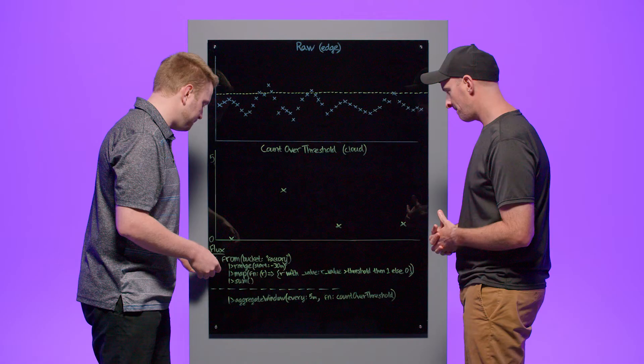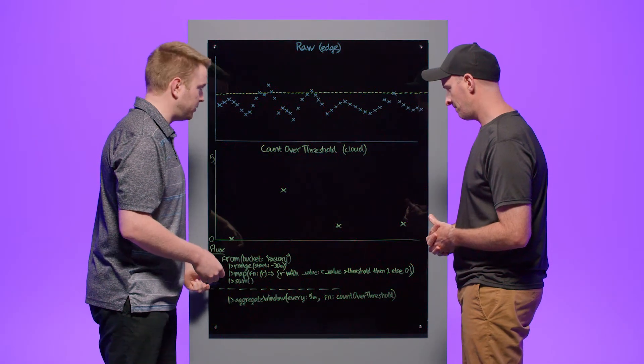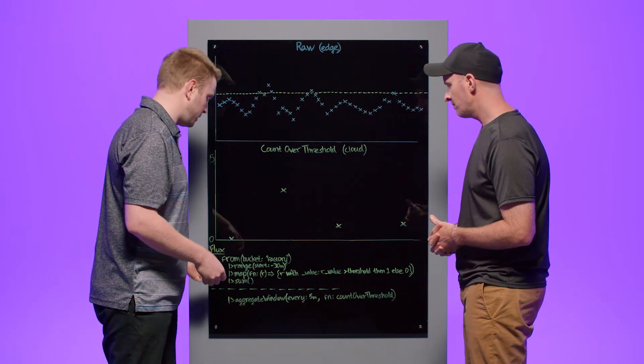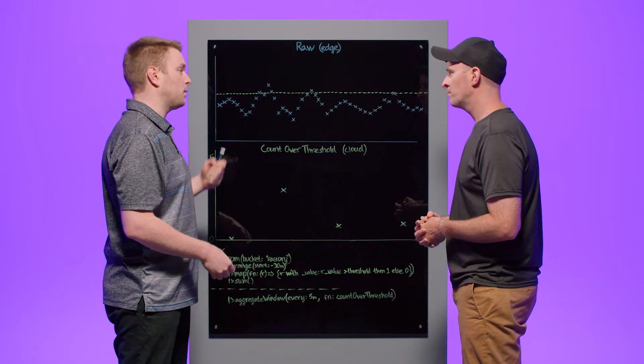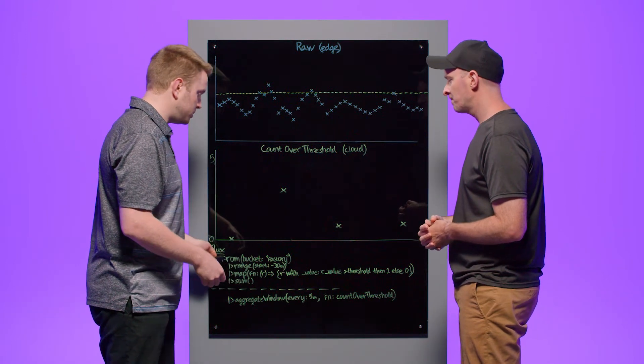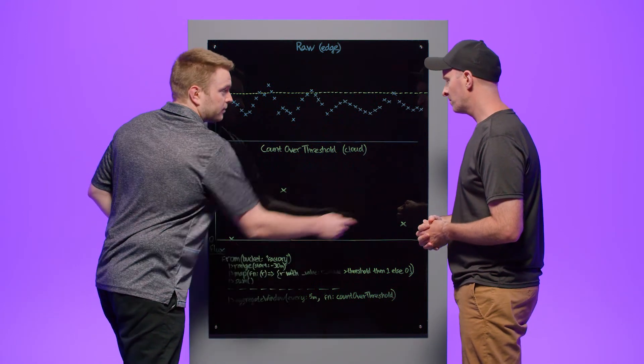Yeah, so super briefly this is the raw implementation of this count over threshold function. Because it's a raw implementation and there's no windowing in it, it's just going to give you back one data point, right? Okay, so what we want to do if we want a line graph or a history, right? We want to put this in a windowing operation.